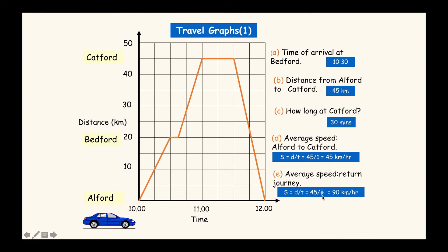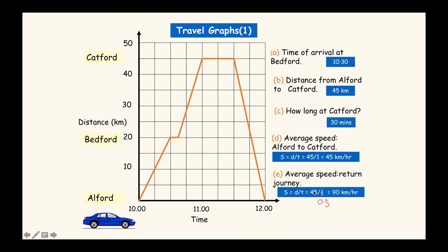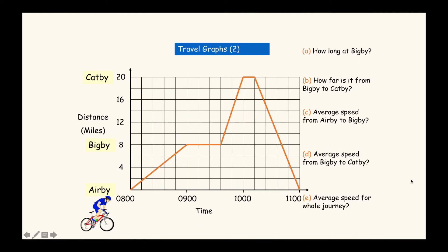You use 0.5 for half an hour - don't use the fraction. So 45 divided by 0.5 equals 90. Remember your time must be in decimal form: half an hour is 0.5, and 15 minutes is 0.25. The average speed on the return journey is 90 kilometres per hour.